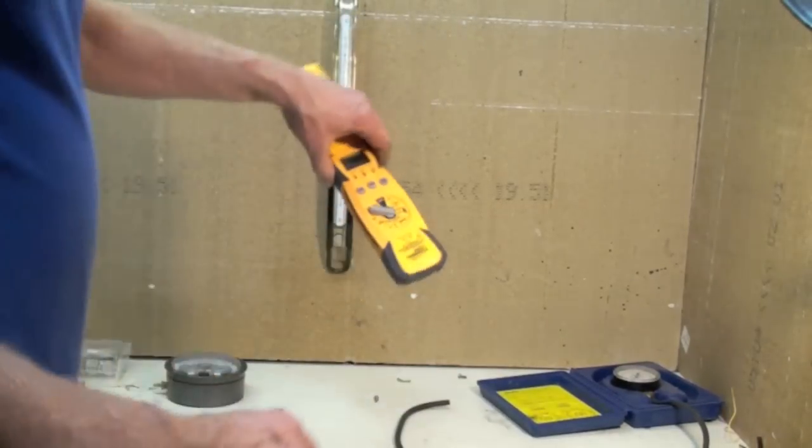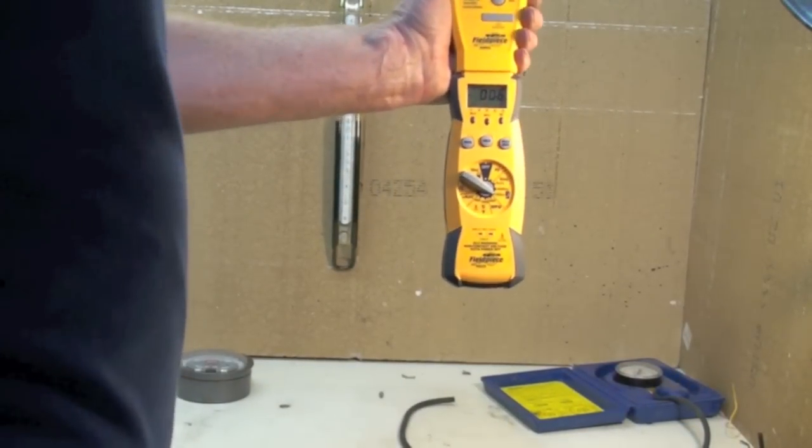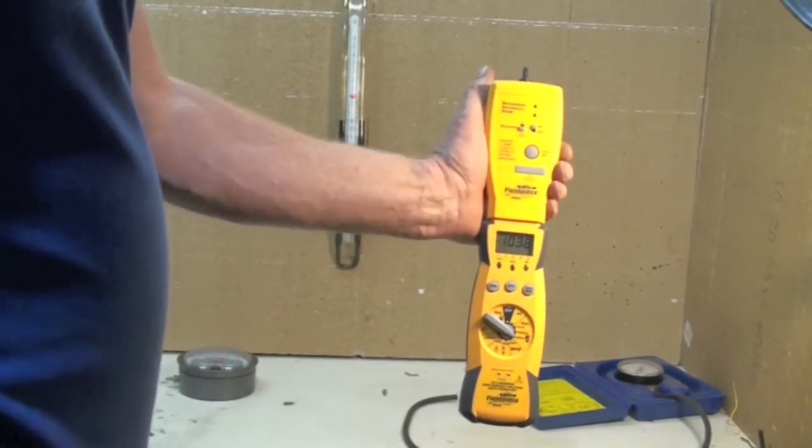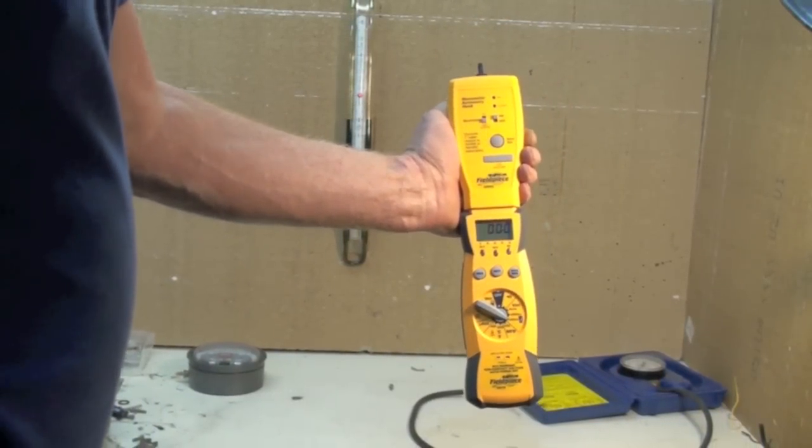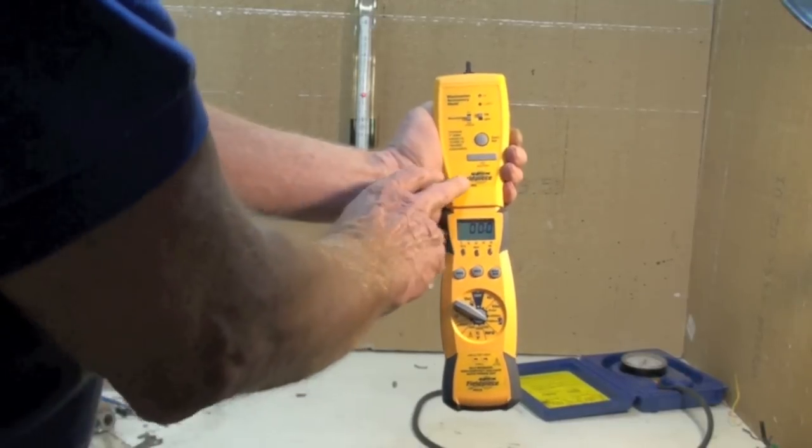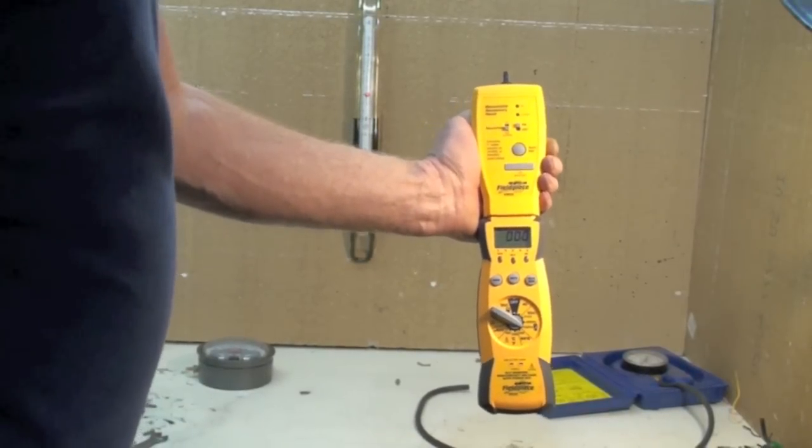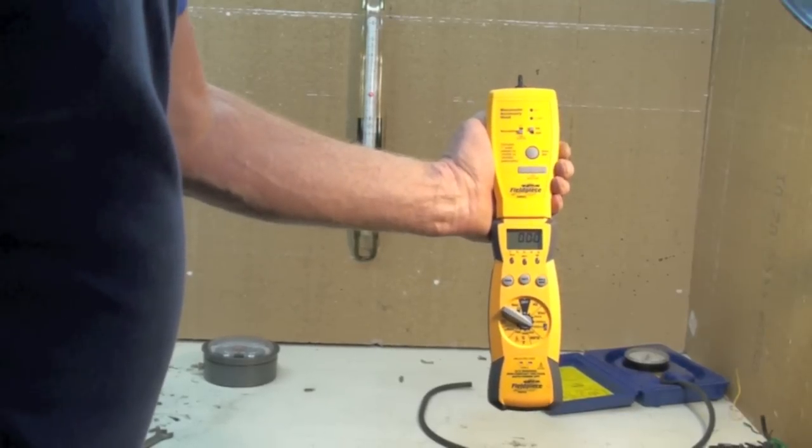The last one is the electronic. This is a field piece and this is an accessory head and it reads digitally.